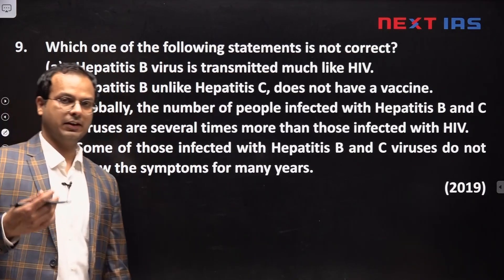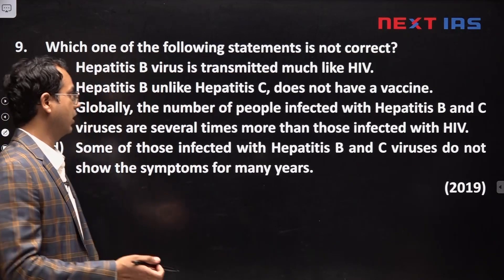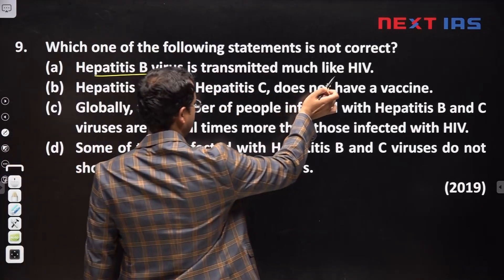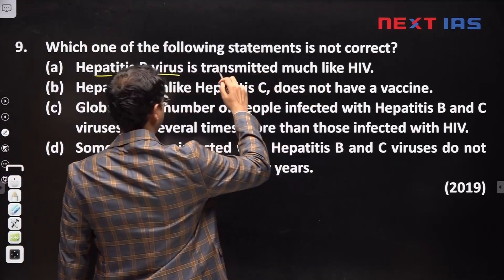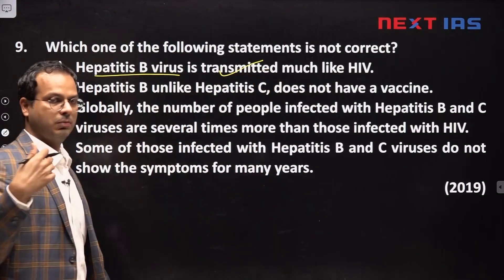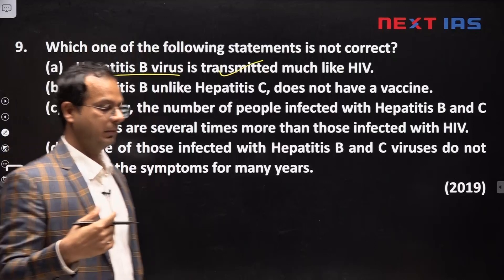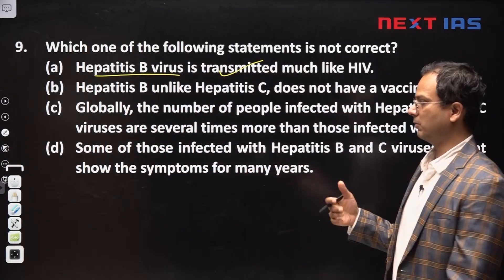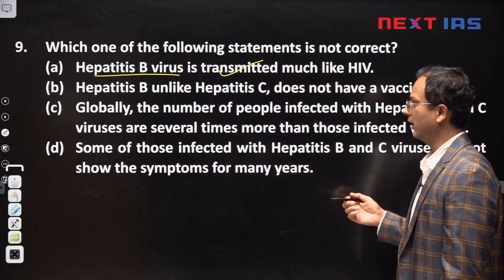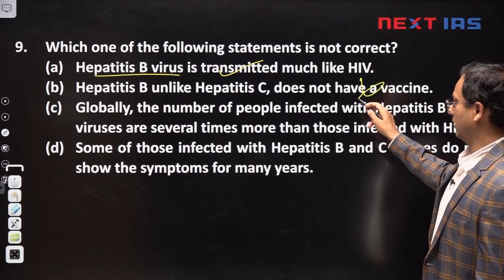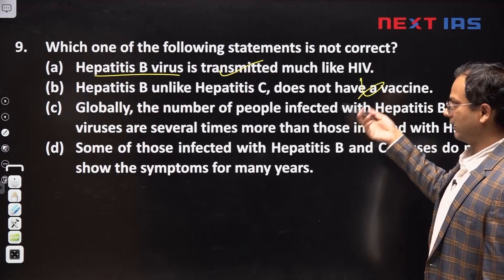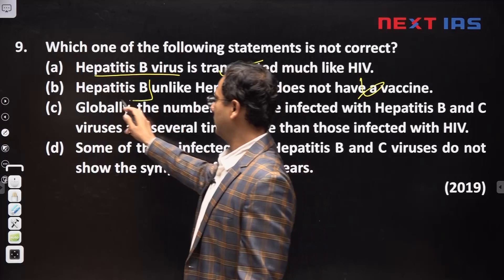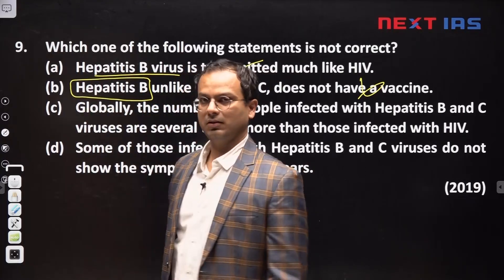The next question asks about the Hepatitis B virus. Hepatitis B virus is transmitted much like HIV — this is true. It can be transmitted through blood, through sexual contact, and through unprotected sex. The statement that it cannot be transmitted through unprotected sex is not correct. Hepatitis B has a vaccine, and in fact the Universal Immunization Program includes the Hepatitis B vaccine.